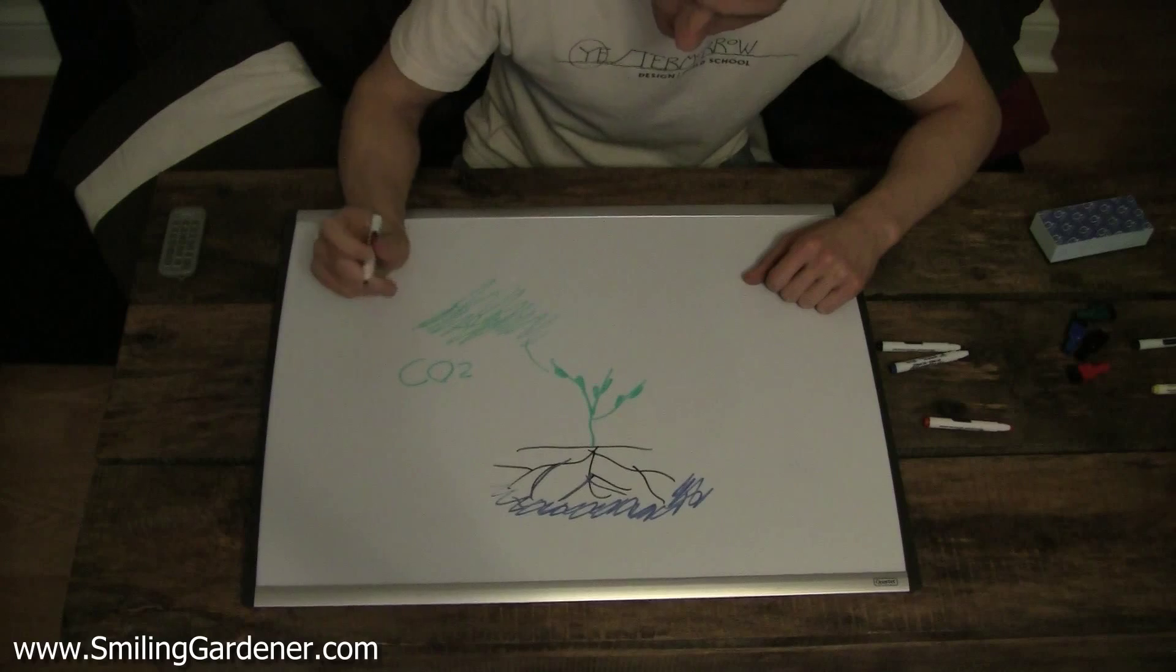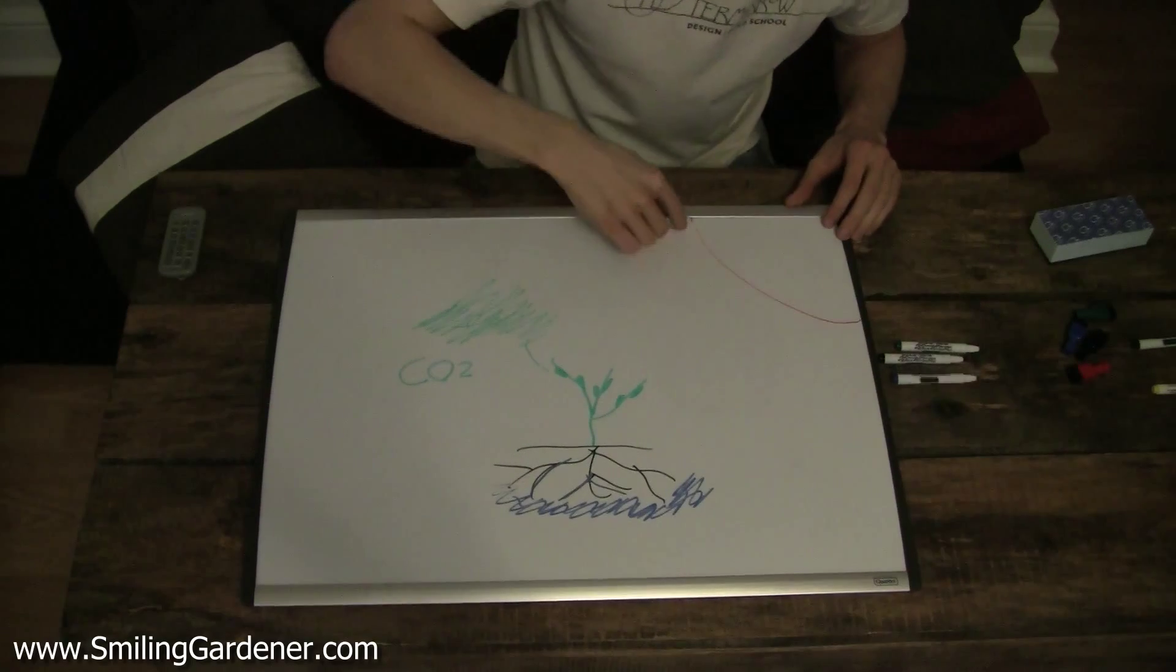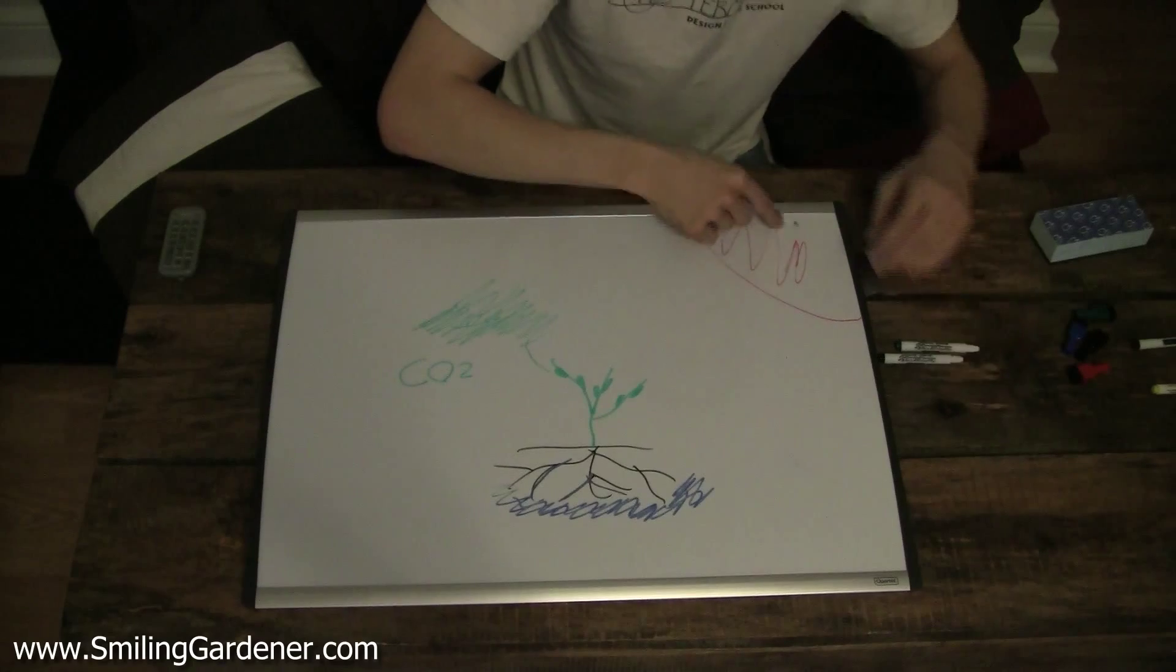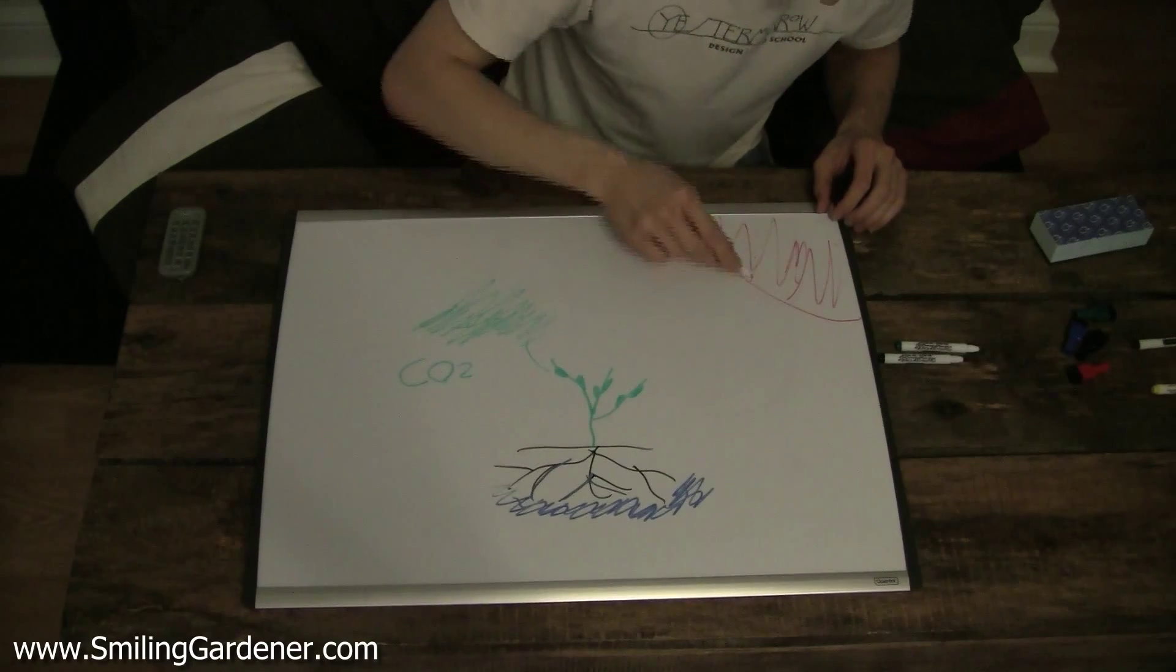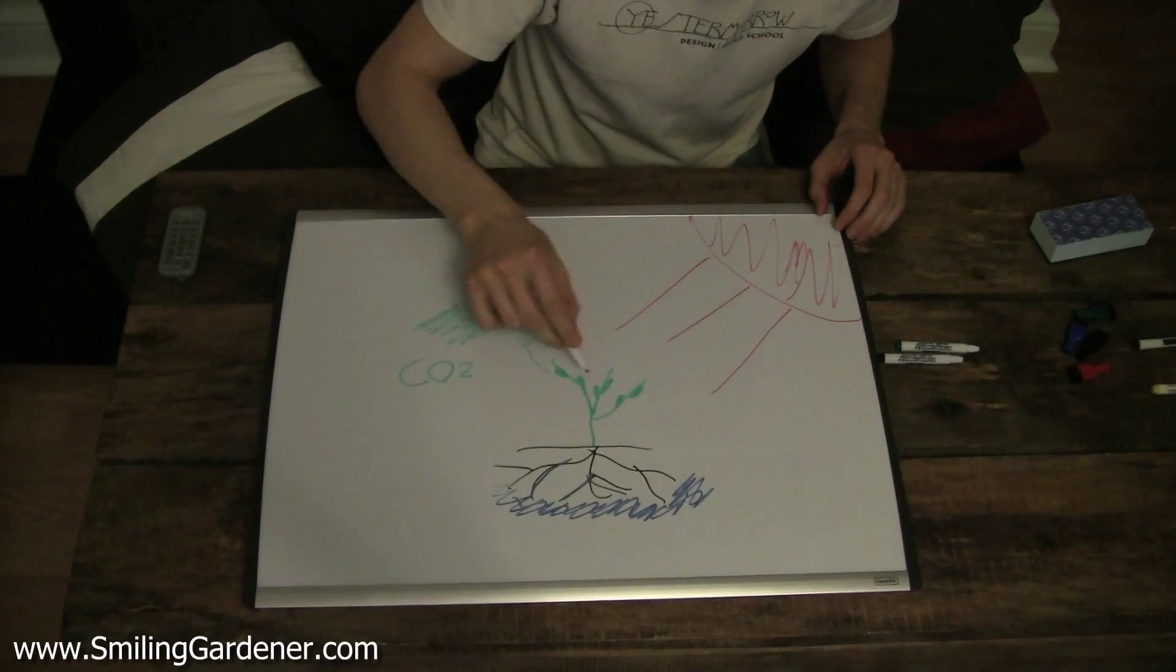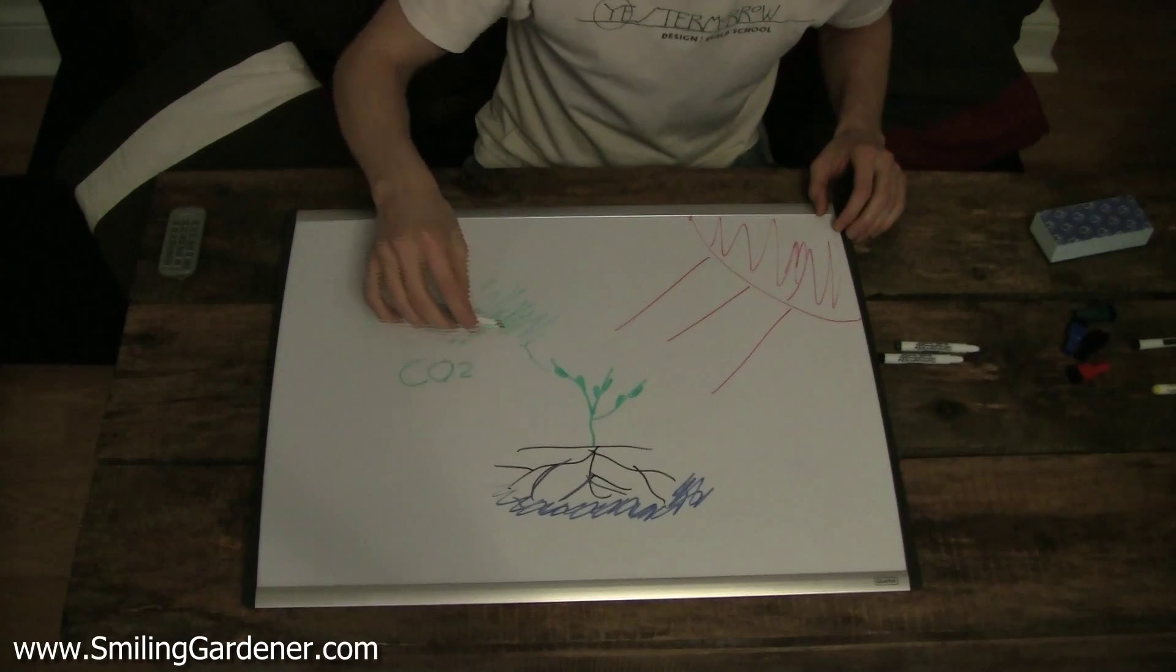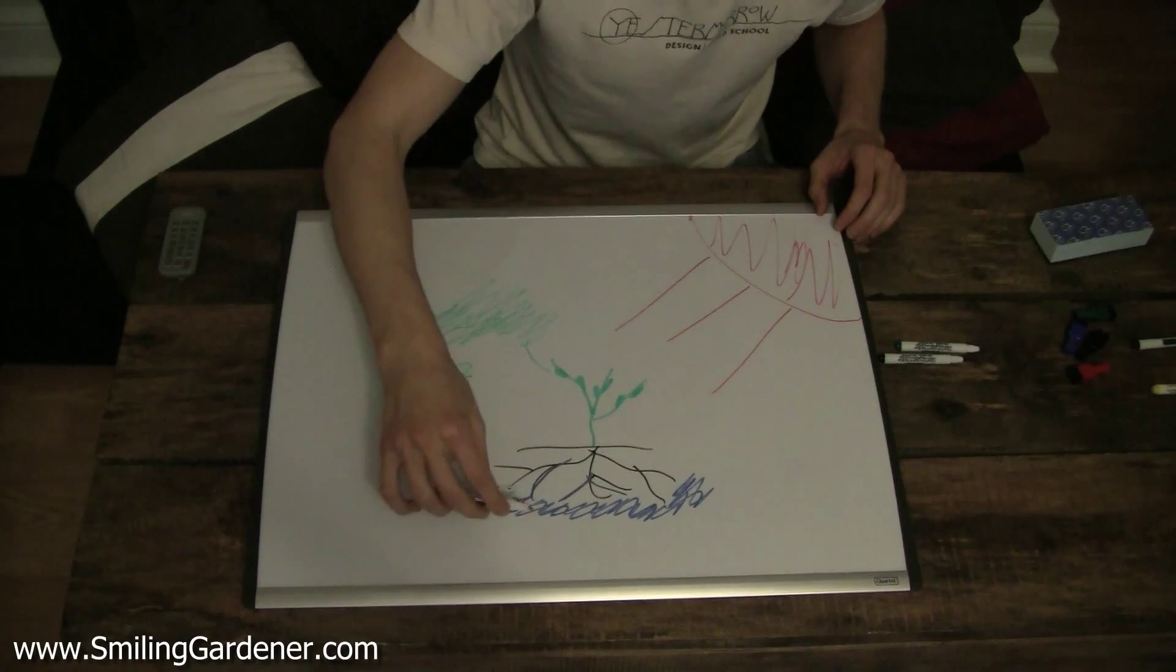And then they need energy and so the energy comes from the sun, the visual light spectrum, the same thing we see. Energy comes down here and that energy allows the chemical reactions to occur and so there you go, you got your water.